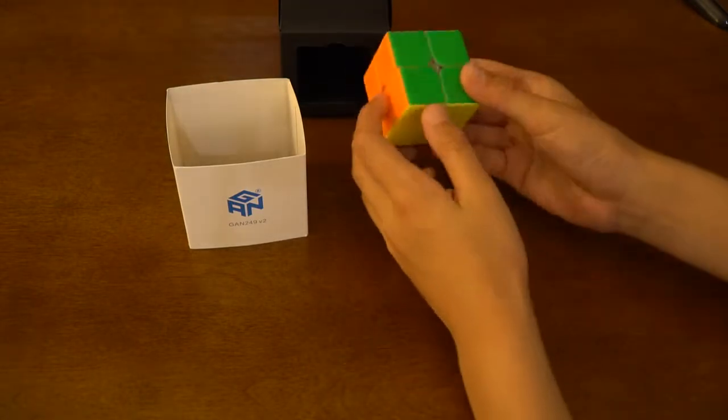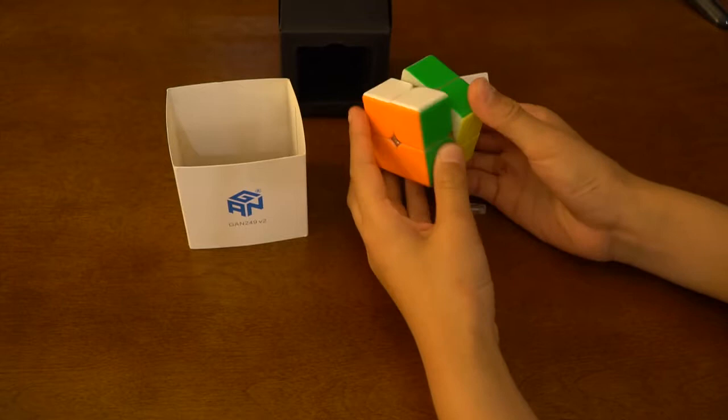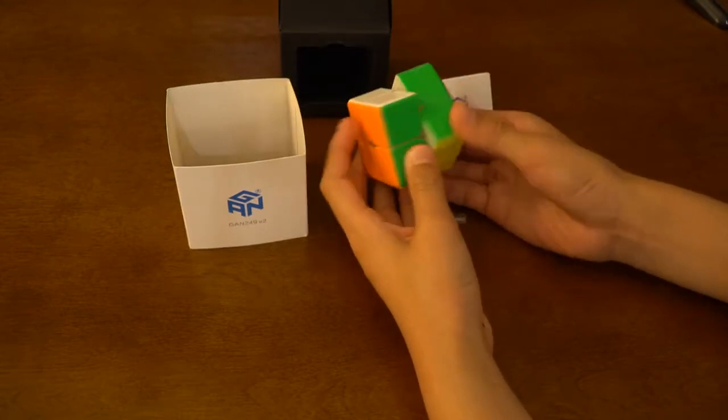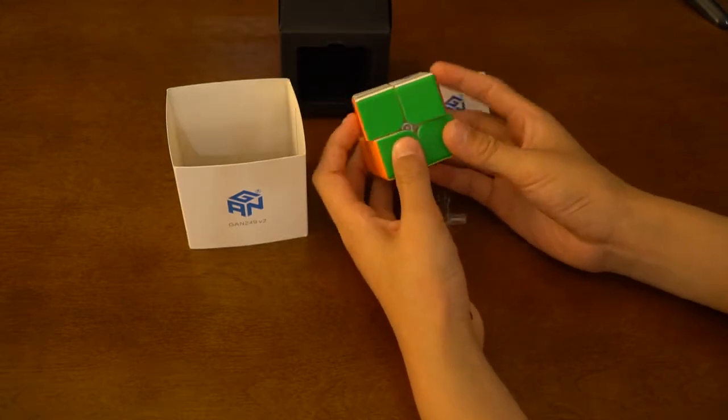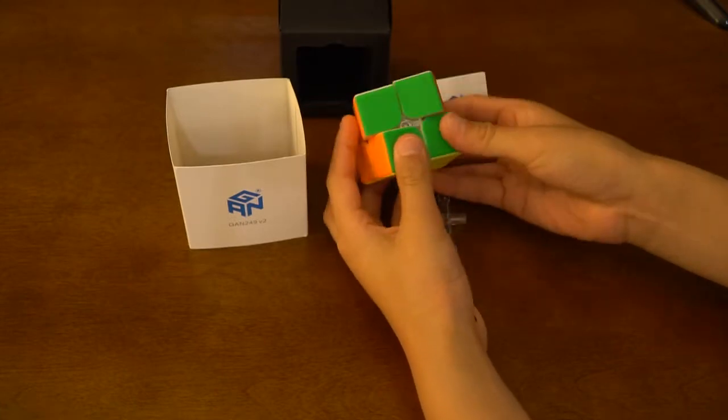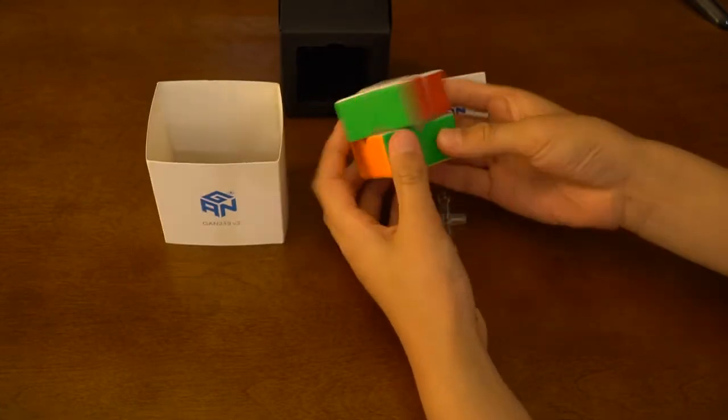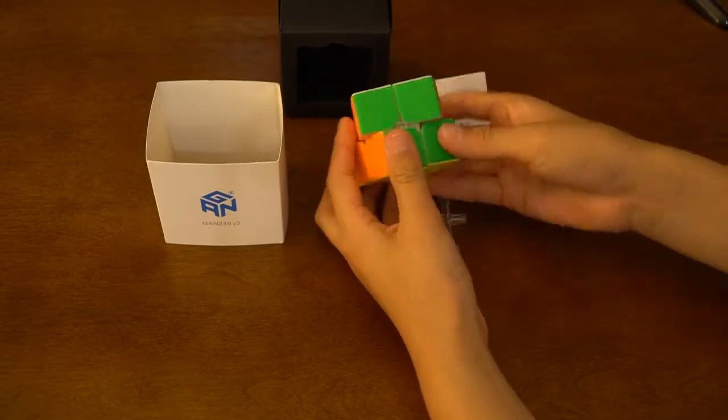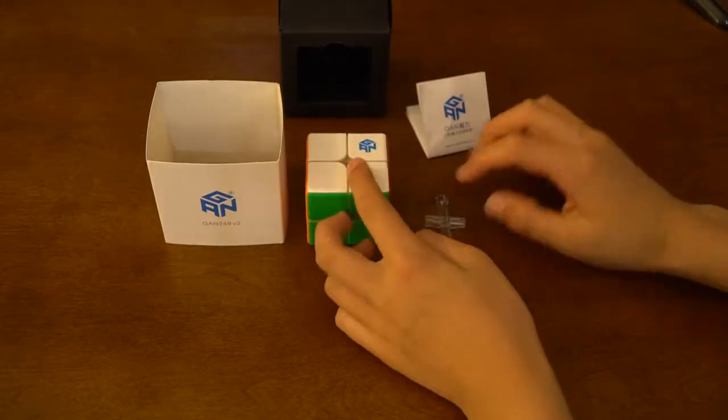I forgot to talk about corner cutting. Corner cutting, 45 degrees and possibly beyond for normal corner cutting. Reverse corner cutting is about a third of a cubie, which is great. Actually, it's more of two-fifths of a cubie.